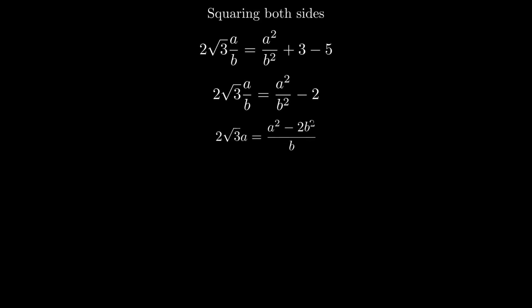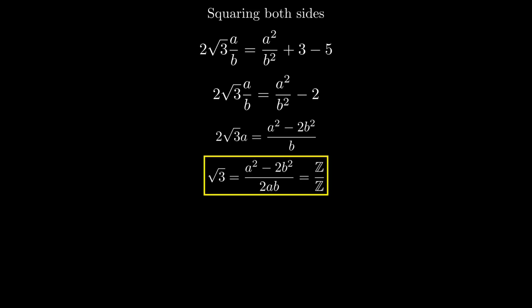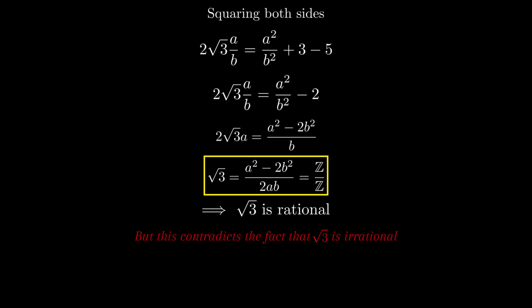Taking the LCM gives 2 root 3 times a over b equals a² minus 2b² over b². Simplifying, root of 3 equals a² minus 2b² over 2ab. Since a, 2, and b are integers and the difference of integers is an integer, root of 3 would be rational as it equals integer over integer. But this contradicts the fact that root of 3 is an irrational number, as it is non-terminating and non-repeating. This contradiction has arisen because of our incorrect assumption. Hence we conclude that root of 5 plus root of 3 is an irrational number.